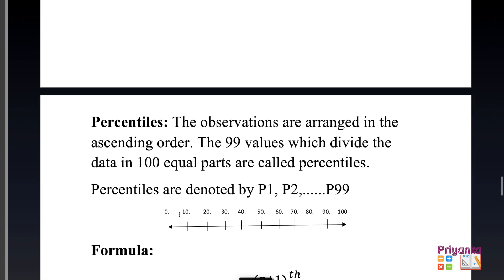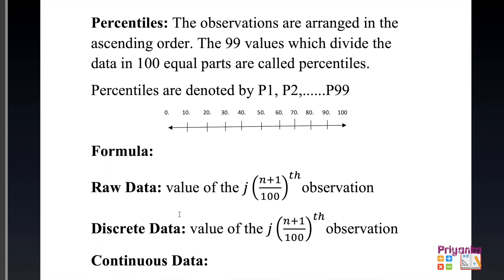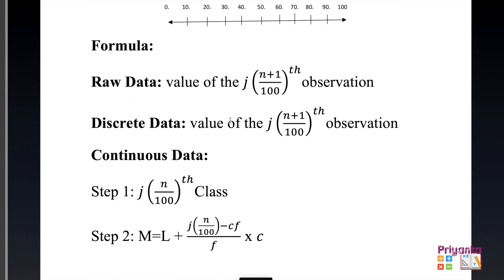Percentile means percentage, denoted by 100. The 99 values that divide data into 100 equal parts are called percentiles, labeled P1 through P99. For example, a question might ask for P15 or P35. For raw and discrete data, the formula uses (j × (n+1)) / 100. If P35 is asked, j = 35.